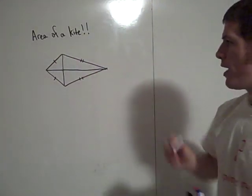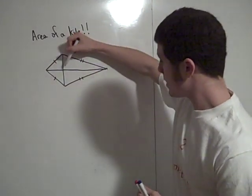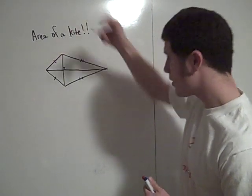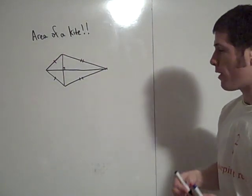And we can draw the two diagonals in. These intersect at a right angle. These are perpendicular. So you have four right triangles.